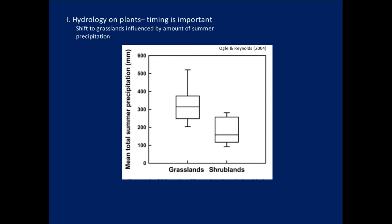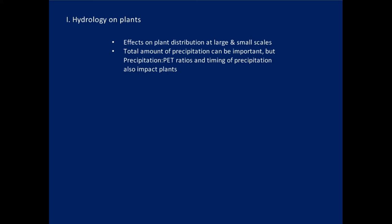What's important is not only the amount but also the timing of precipitation. Keona Ogle and Jim Reynolds compiled data from around the world: if you have more than about 250 millimeters of summer precipitation you tend to get grassland-type vegetation; less than about 250 millimeters of summer precipitation you get more shrublands — the sagebrush steppe type of vegetation. So the effects of hydrology on plants include distribution at multiple scales, total precipitation amount, the balance between precipitation and potential evapotranspiration, and timing of precipitation.